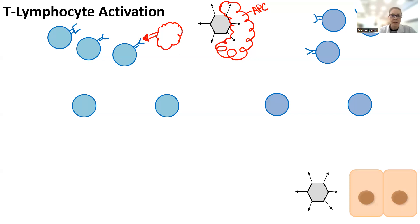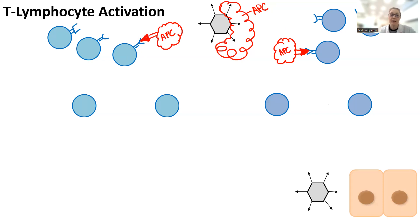Now these two things can actually bind together. This population of cells — whether CD4 or CD8 — also has to be activated by an antigen presenting cell presenting its antigen. You don't just have the antigen hit the T cell; it has to hit the T cell using an antigen presenting cell.